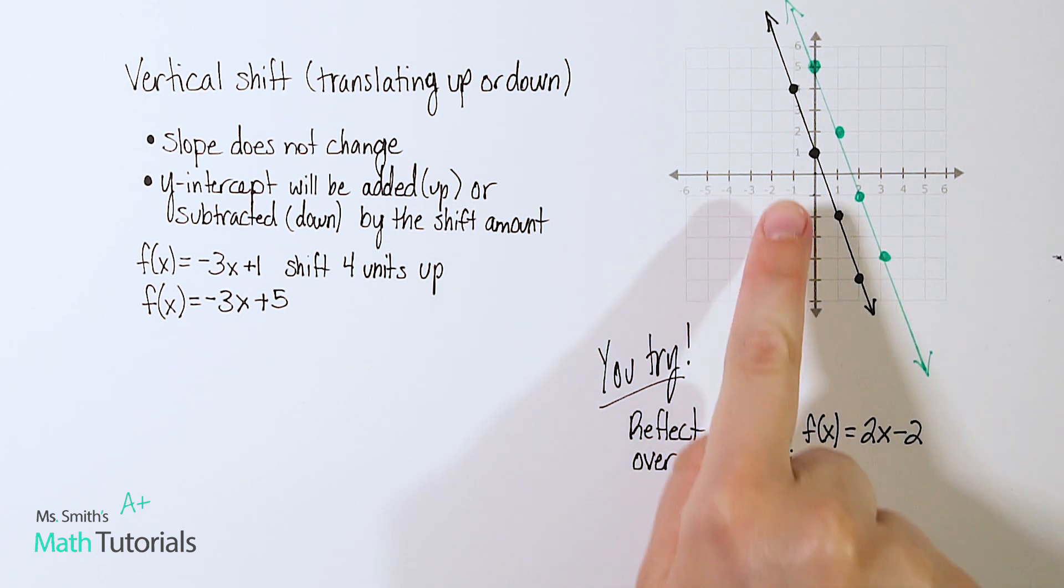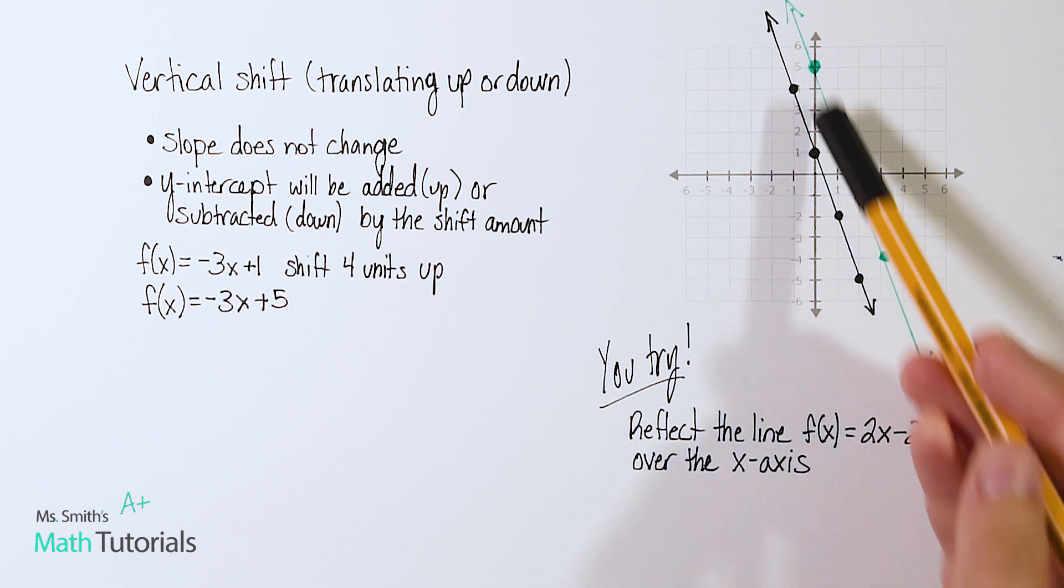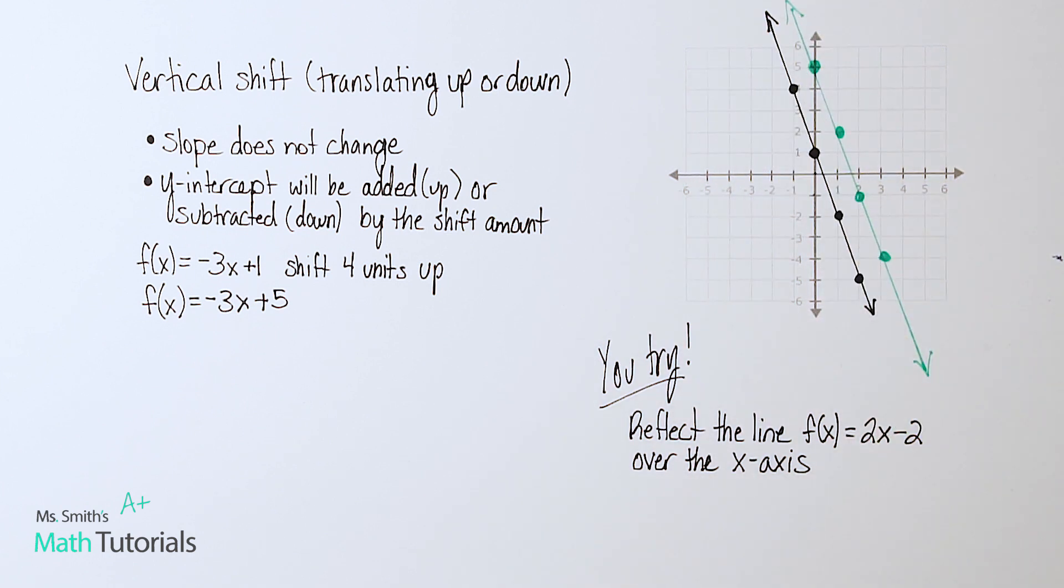So notice that we just shifted the line up four units. The slope stayed the same. So we really have created two parallel lines. Those lines will never intersect.